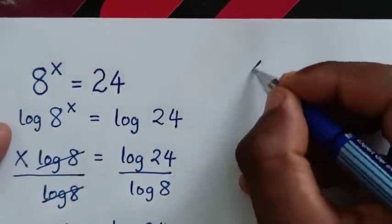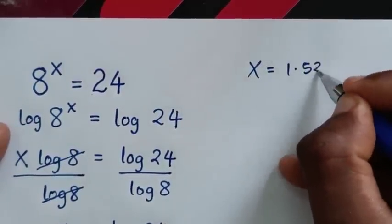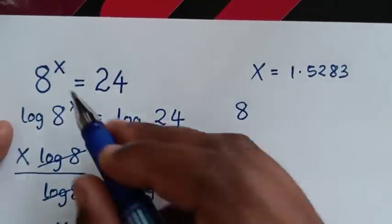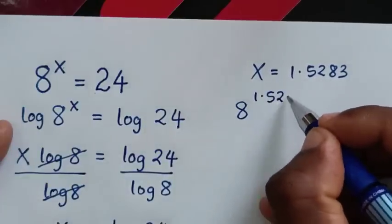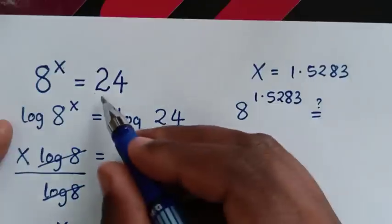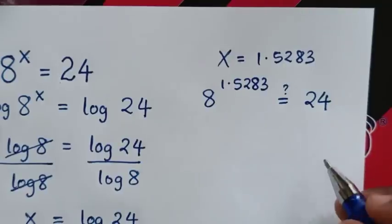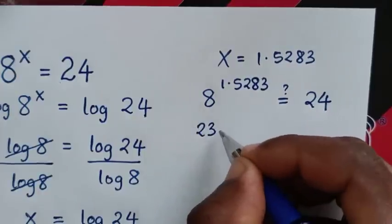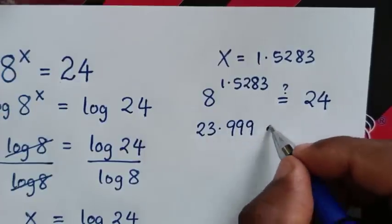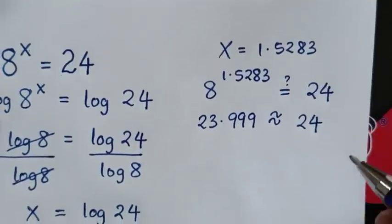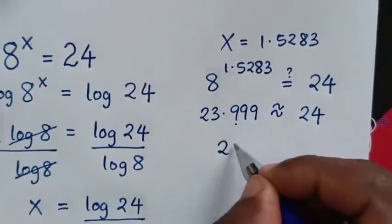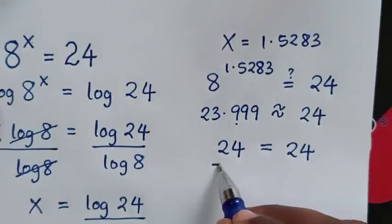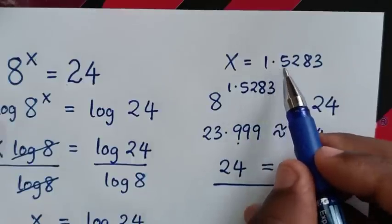Now let's verify if this answer is correct. We substitute x equal to 1.5283 back into the original equation: 8 to the power of 1.5283 equals 23.999, which is approximately equal to 24. Rounding to one decimal place gives 24.0, which equals 24. The left side and right side are equal, so x equals 1.5283 is confirmed correct.